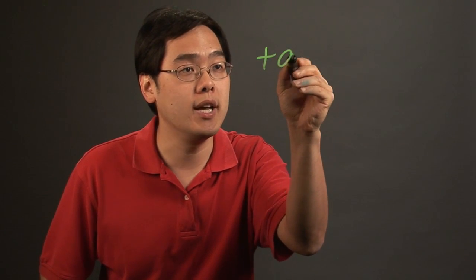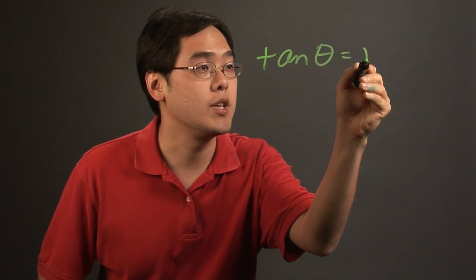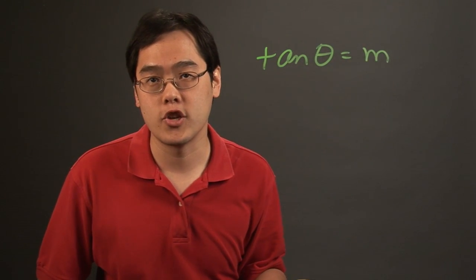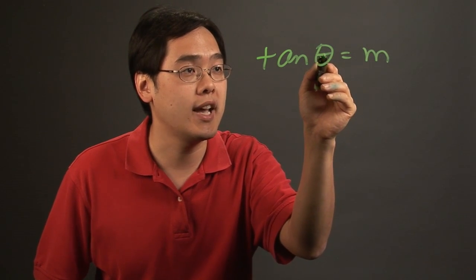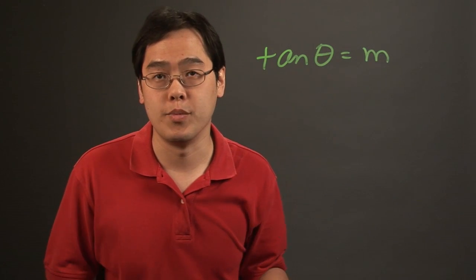When you're converting from angles to slope, all you're really doing is taking the tangent of any angle that you're given. The formula tangent of theta equals M is the formula you're going to use. In other words, to find the slope, just take the tangent of that particular angle and you'll be good to go.